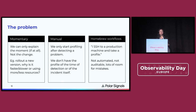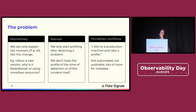The problem with sampling profilers is that it is only momentary — we don't get a continuous one. We only start profiling once we detect the problem, so we don't know what's happening as we're leading up to it. And it's not really automated; we might have to instrument the code, which is often a very tedious process. We don't have a one-click solution right now.